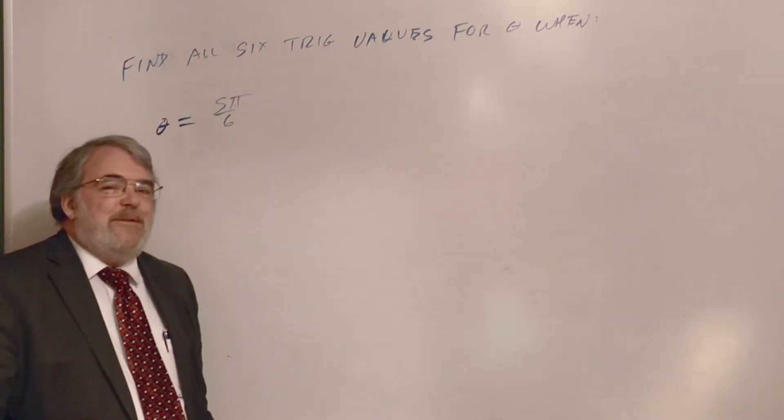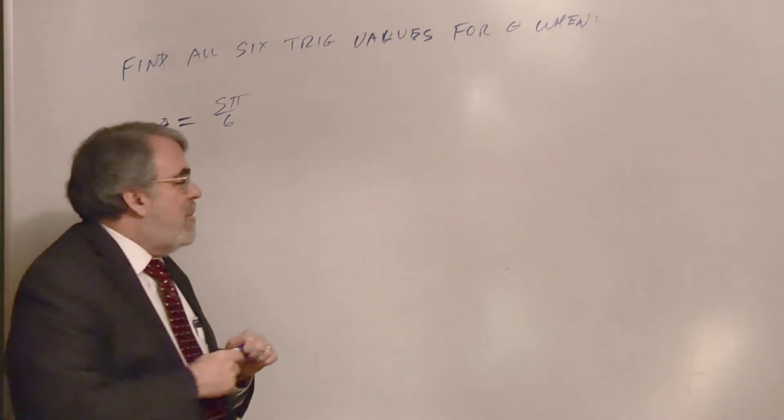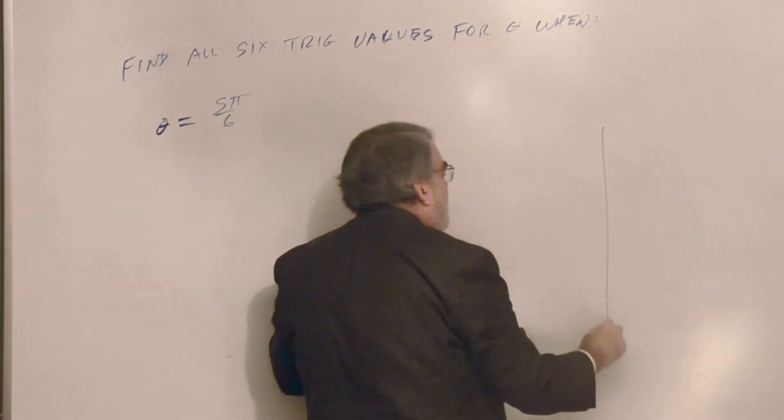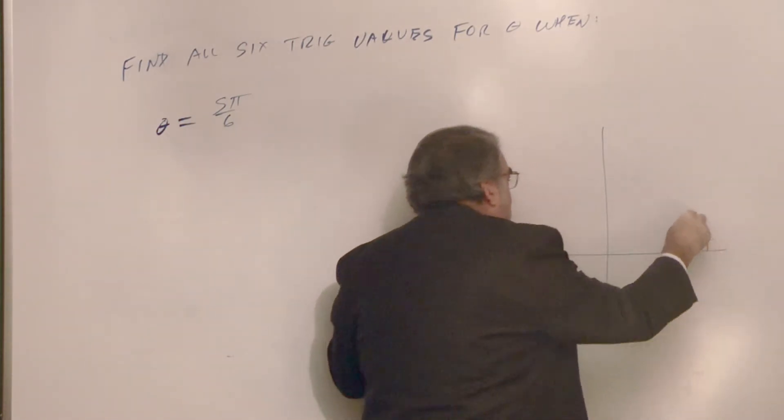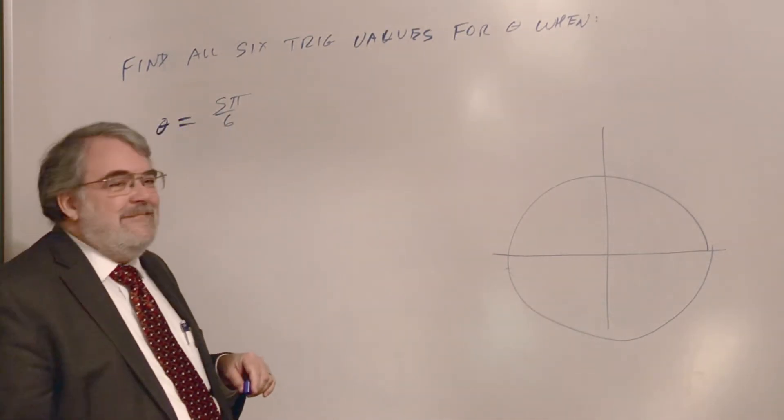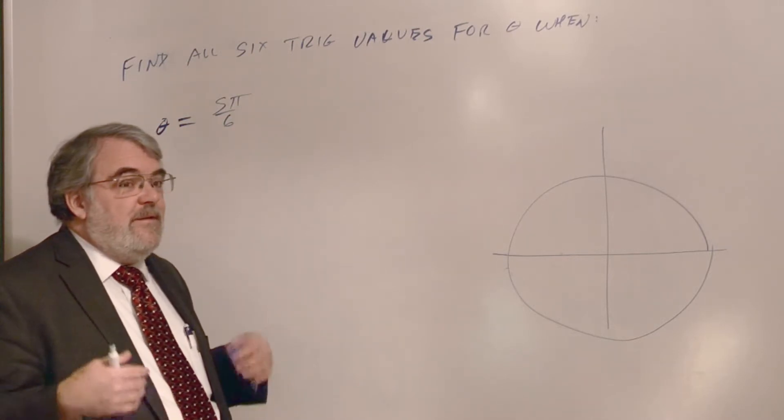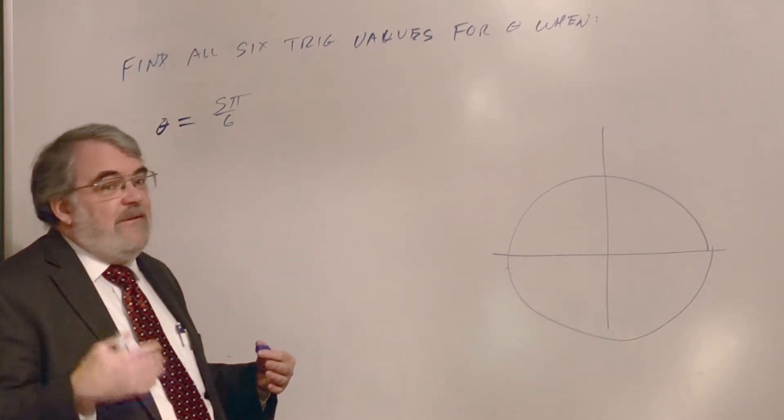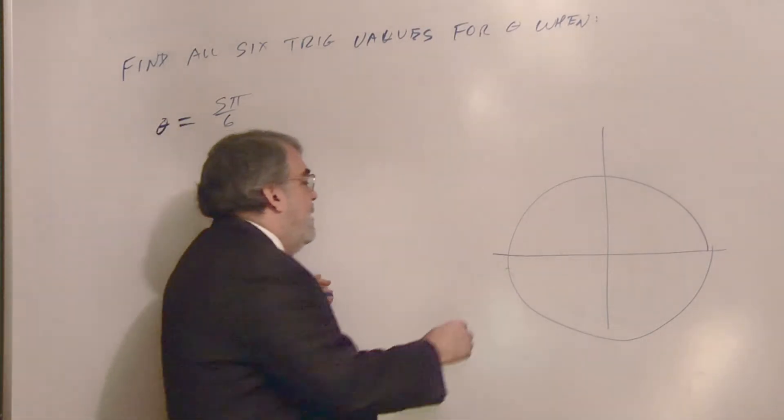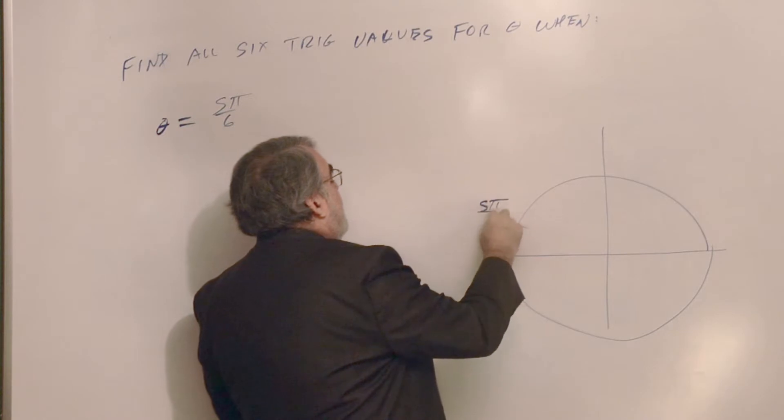One more example for this video. Theta is 5π over 6. Where is that? Over here. 5π over 6. That's 5 sixths of a half circle. What's 1 sixth of a half circle? It'd be 30 degrees, wouldn't it? And so if you had 5 sixths of a half circle, it'd be 5 times 30. It'd be 150 degrees. That's over here. So here is 5π over 6.